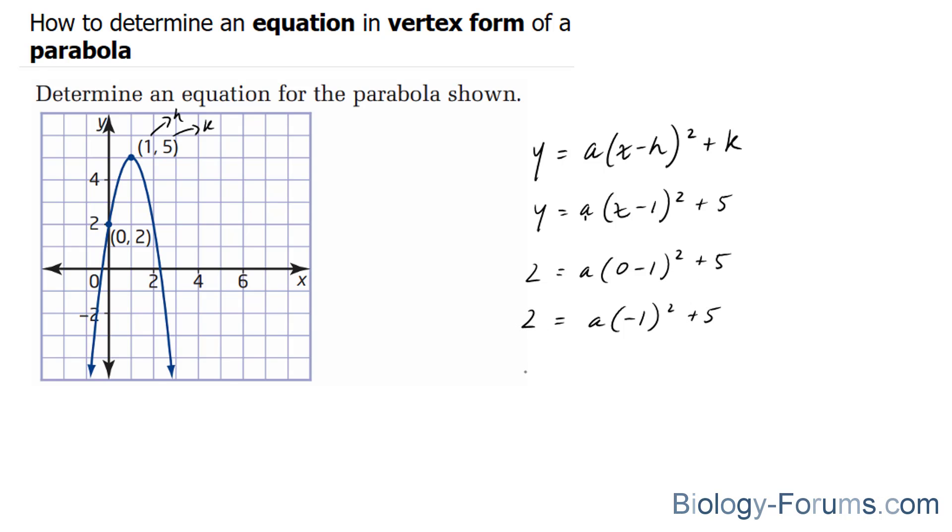I'll bring this 5 over. And what I'm trying to do is isolate for this a. 2 minus 5 is equal to -1 to the power of 2, which is equal to 1. So 1a, that is equal to -3.